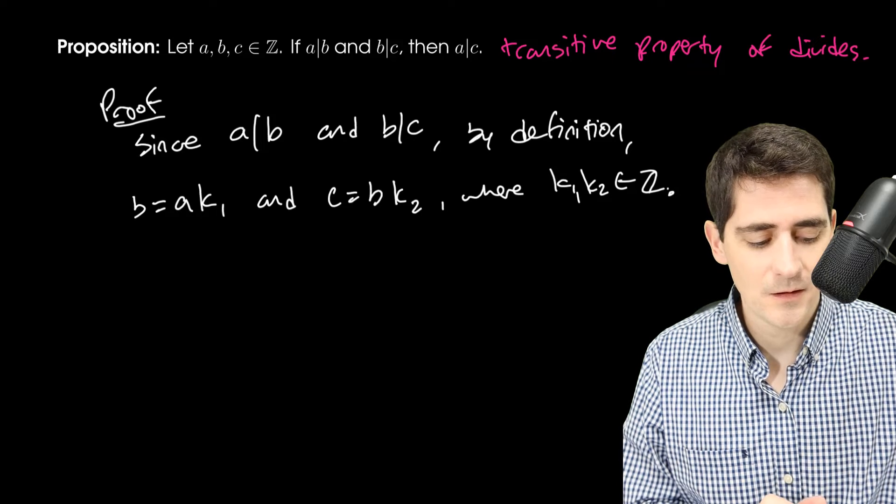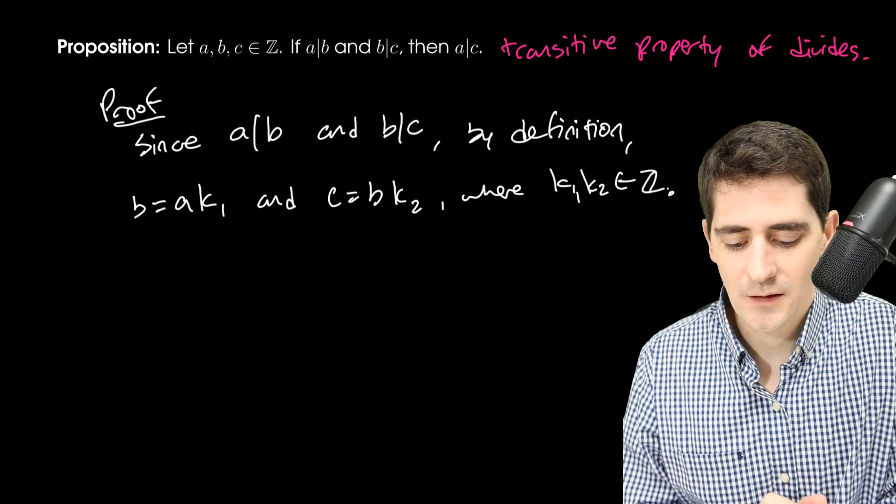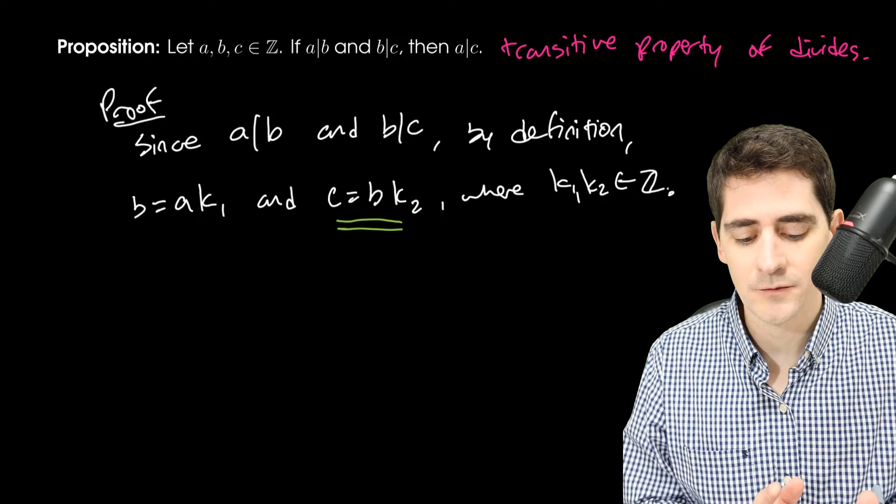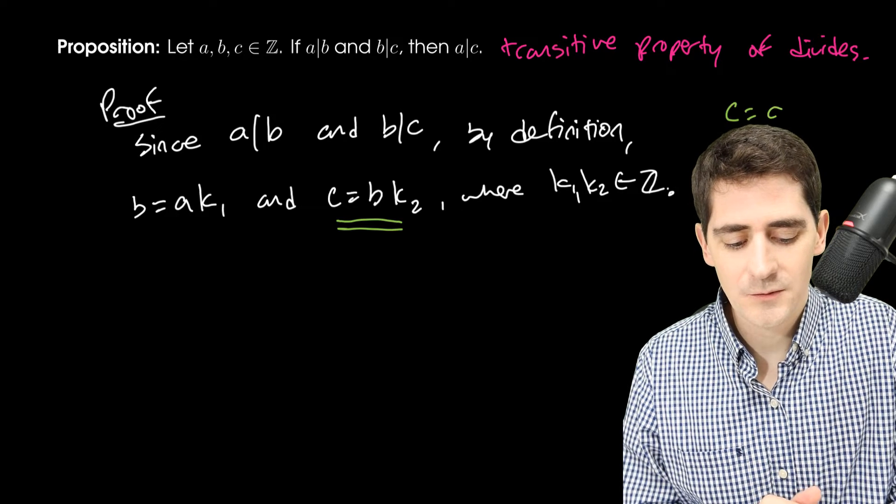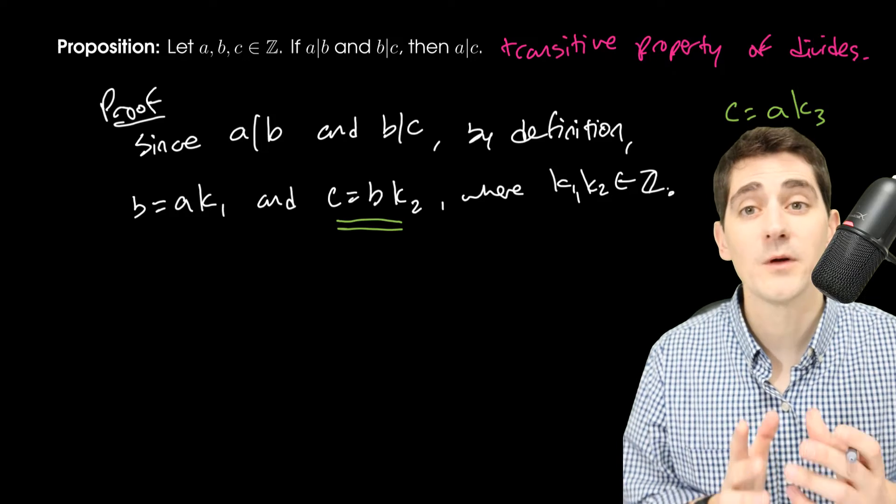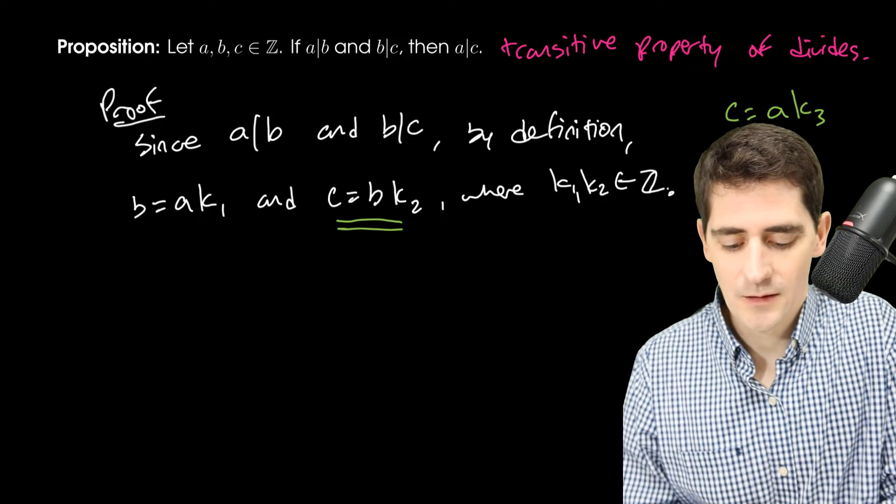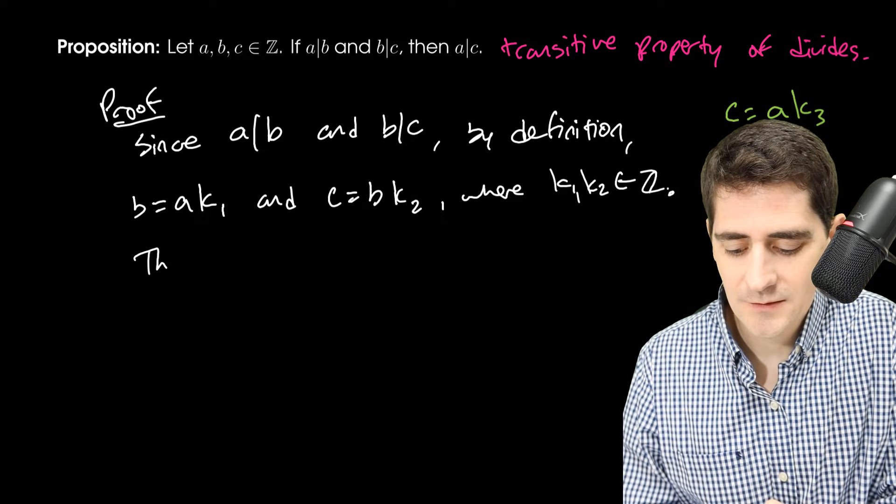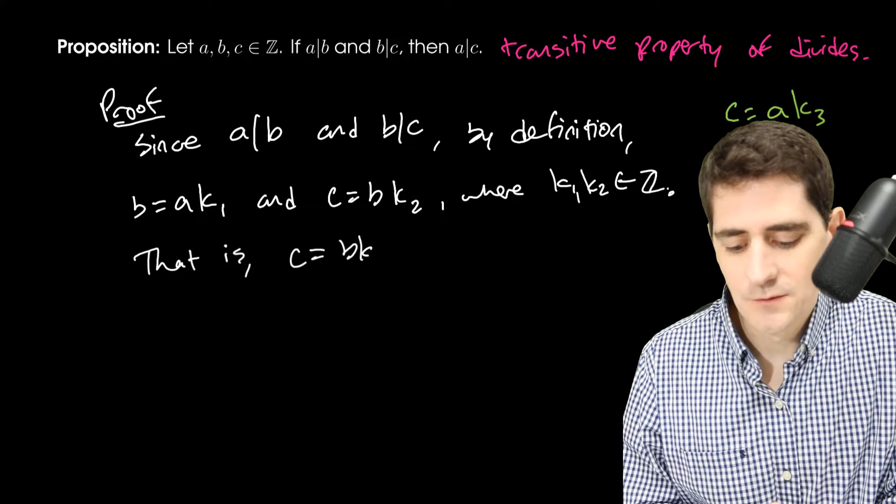Okay, so now what I need to do here, if I'm thinking about like my scratch work, I need to take this expression and somehow get A involved. I need C equals A times maybe K3. That's what I need to get to. Okay, but we have all the pieces in place to do this. So I'm going to say that is C equals BK2.